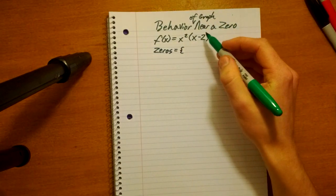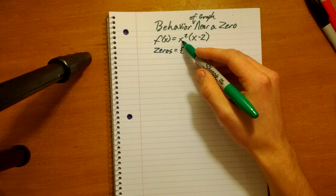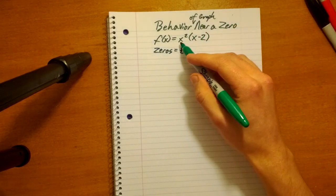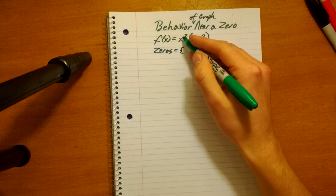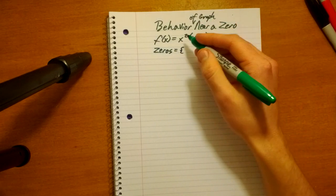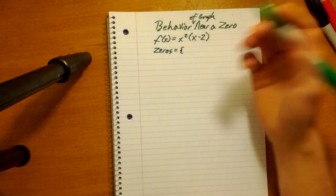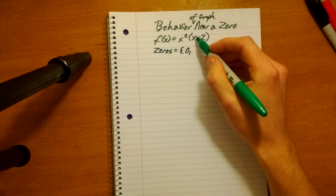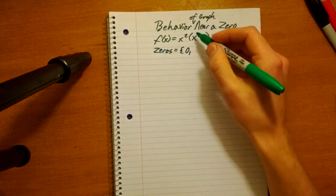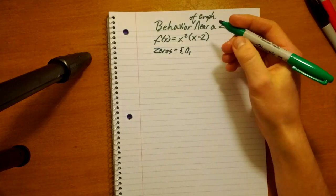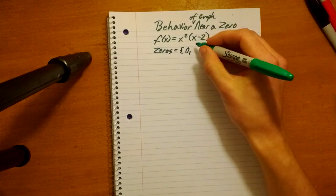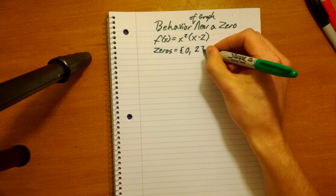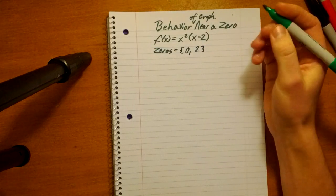So, given what we've learned already, the zeros are the x-intercepts, and they are where y, or function of x equals zero, the whole thing equals zero. So if we want to set the whole thing equal to zero, then we put zero here for the x squared, then zero squared is zero, times x minus 2 will equal zero. And then x minus 2, we want to set this whole thing equal to zero, so what minus 2 is zero? Well, 2 minus 2 is zero. Easy beans.